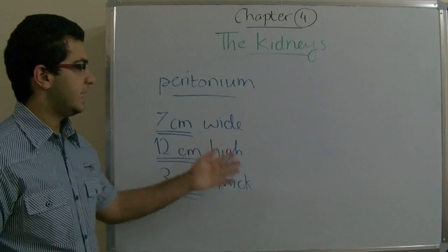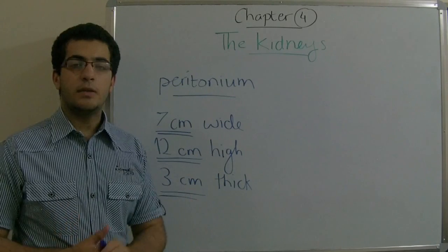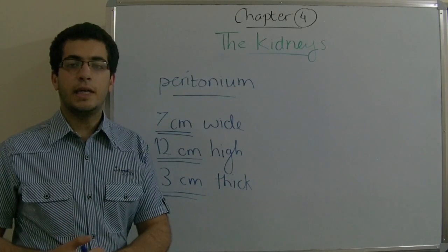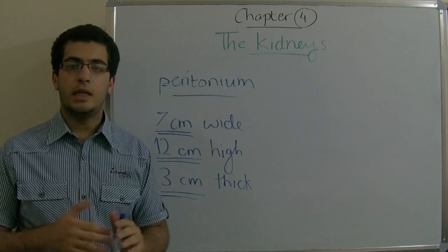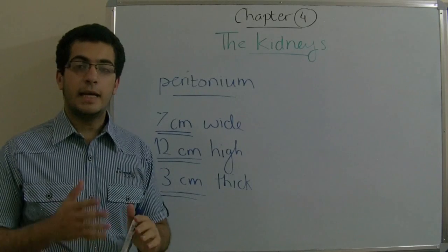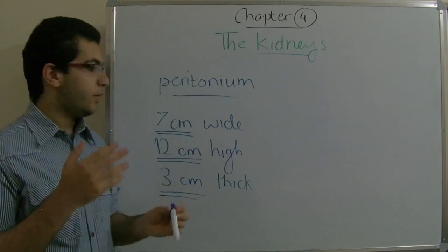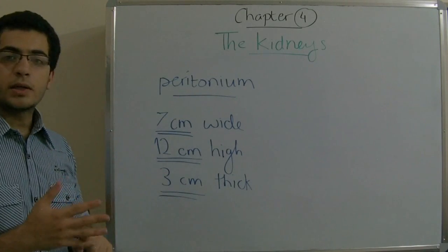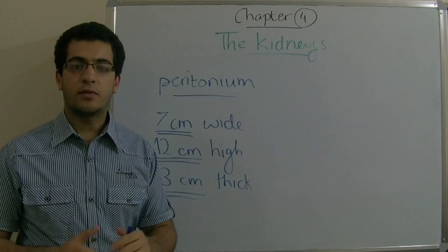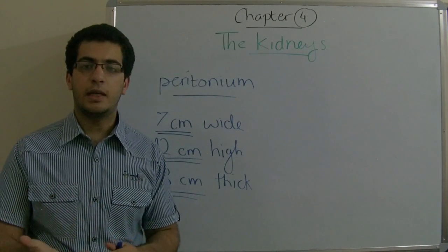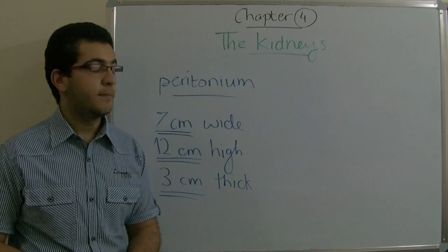The kidney inside the human body is bean-shaped, as you can see in this figure. Because it is bean-shaped, its outer surface is convex and its inner surface is concave. At this concave inner surface, both a renal artery and a renal vein enter the kidney for supplying it with blood and receiving the blood back.